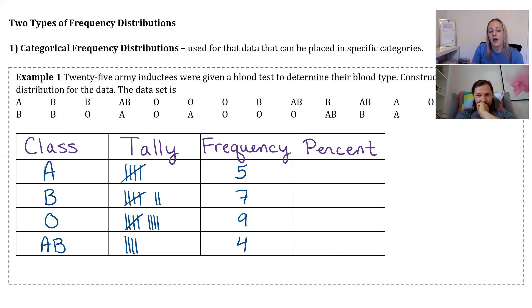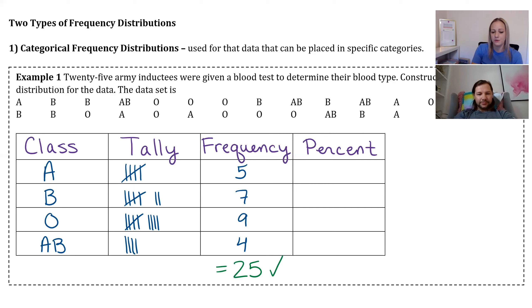One way to check whether you captured all the data values is to add up the total frequencies. If you add 5, 7, 9, and 4, you get 25, which is how many army inductees were in the blood type study. That confirms we didn't miss any.